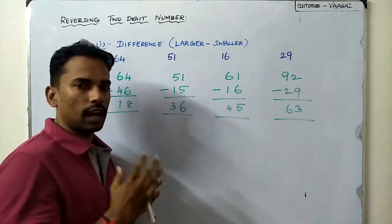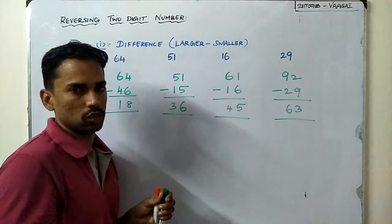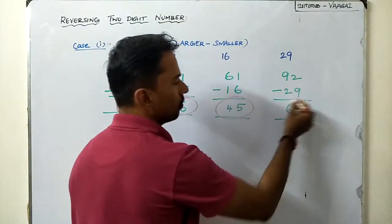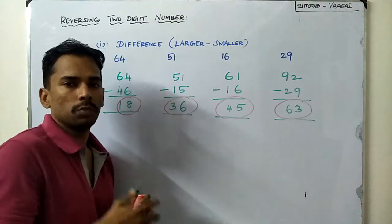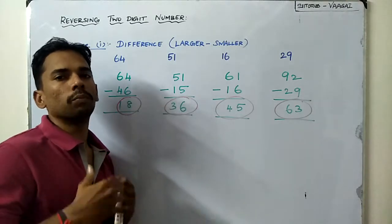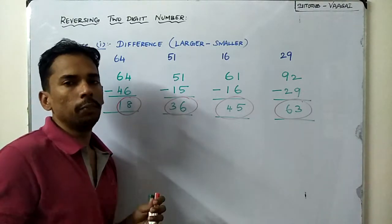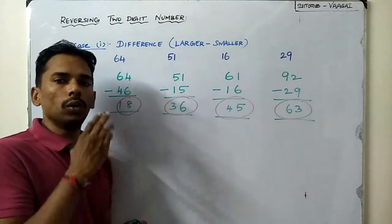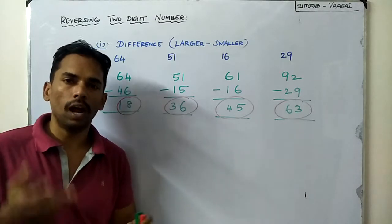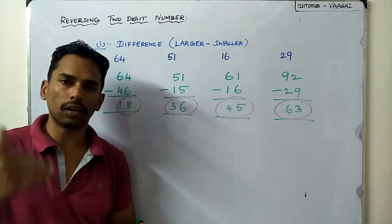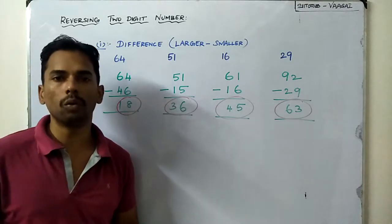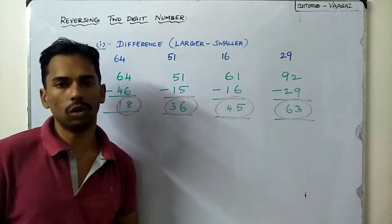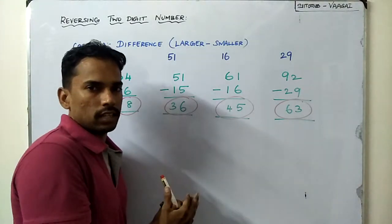Now let us look carefully at all the answers: 18, 36, 45, and 63. Can you see any similarity between these numbers? Without any doubt, these are all multiples of 9 — all these numbers are divisible by 9. In fact, if you take any two-digit number, find its reverse, and subtract, the answer will always be a multiple of 9.